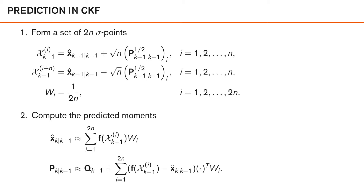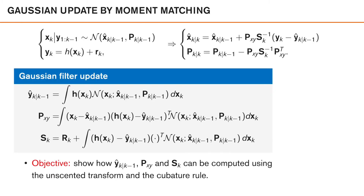That was the prediction step. Now let's look at the update step of these filters. The basic strategy is to perform the update by matching the moments of the joint distribution of x_k and y_k, and then obtain the posterior moments of x_k using the lemma on conditional Gaussian distributions mentioned previously.